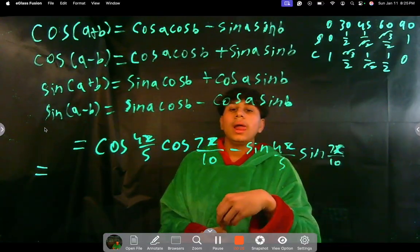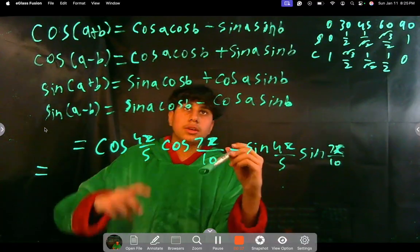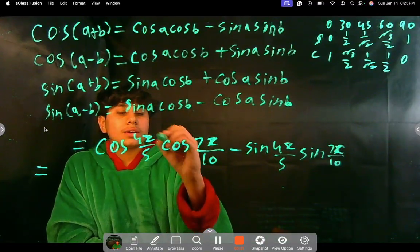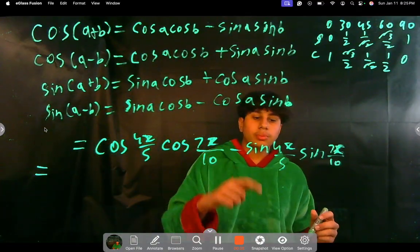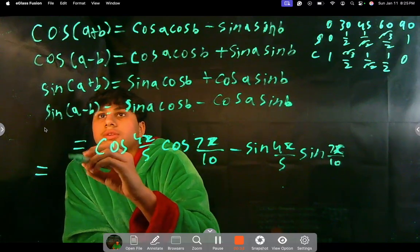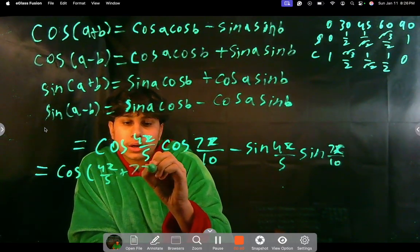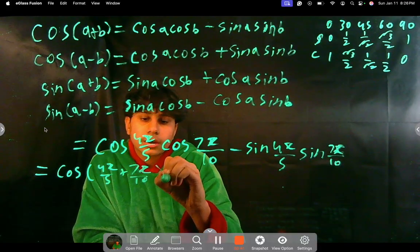So let's just say 4π/5 is a and 7π/10 is b, right? So you're adding those, cosine of 4π/5 plus 7π/10. And now we're going to do two steps in one.